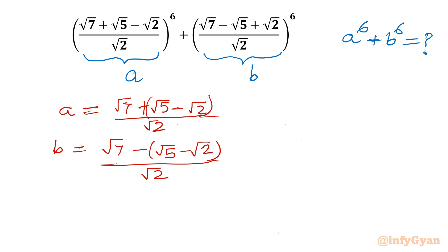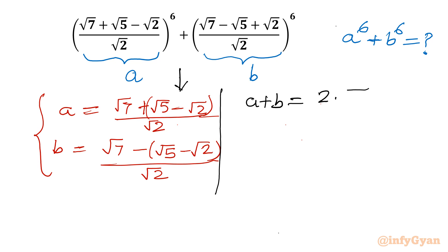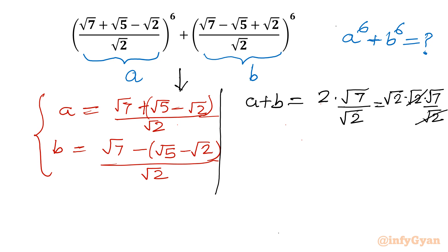From these two values I will calculate a + b and a × b. For a + b, the (√5 - √2) and -(√5 - √2) terms cancel out, leaving 2√7 divided by √2. Writing 2 as √2 × √2, and cancelling one √2, we get a + b = √2 × √7 = √14.